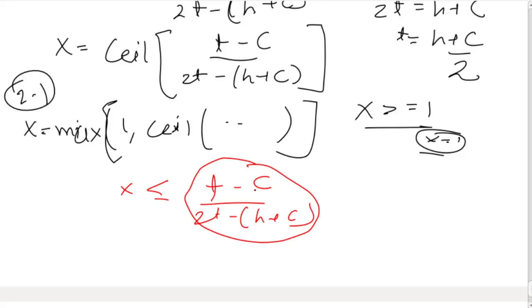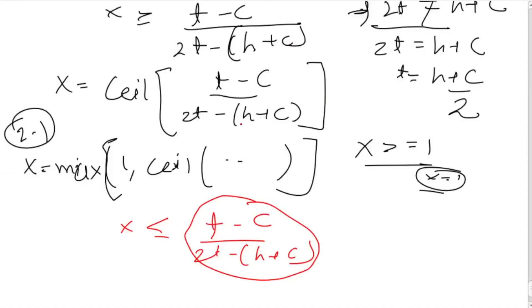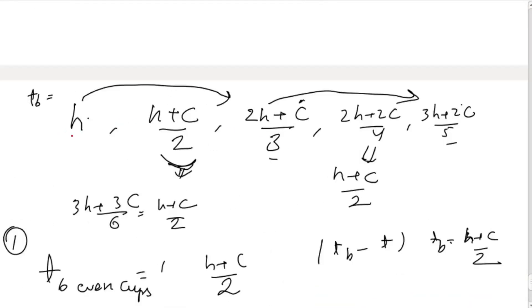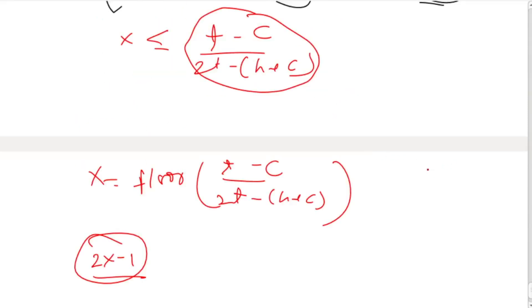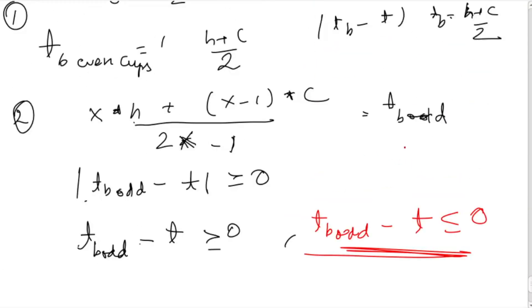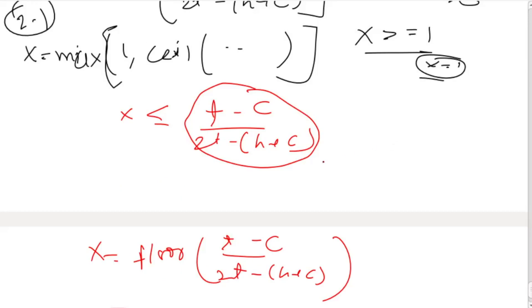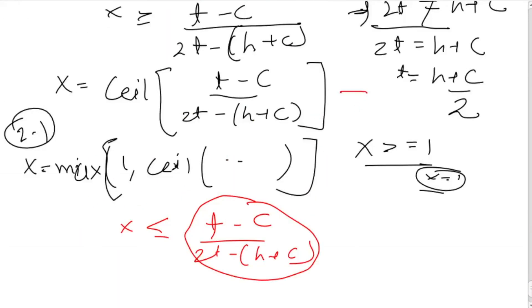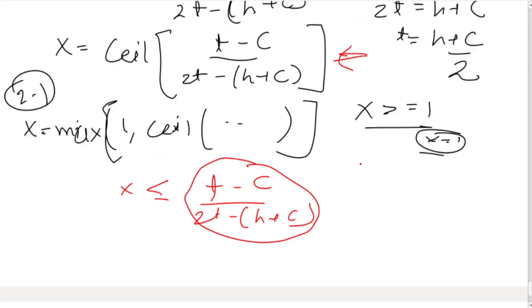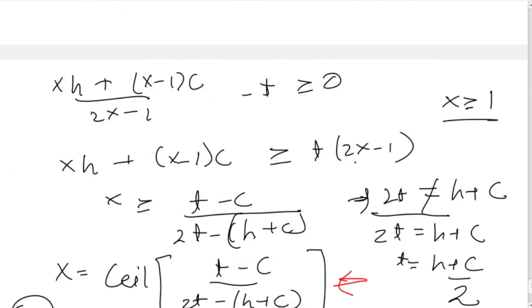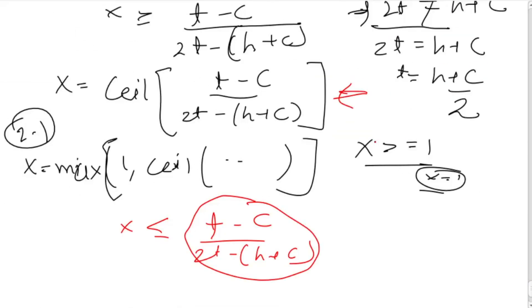For a given x, if x=1 the number of cups is 1 (i.e., 2*1-1=1), and if x=2 the number of cups is 3 (i.e., 2*2-1=3), so generally the number of cups is 2x-1. You now have three candidate differences to compare: one from the even case and two from the odd cases. You choose the value of cups for which |T_barrel - T| is minimum.